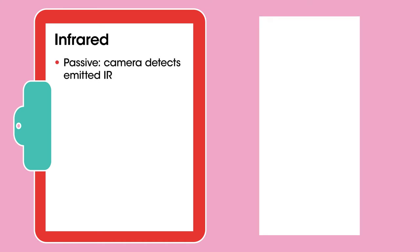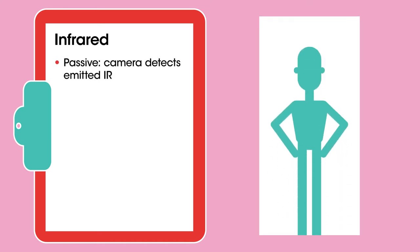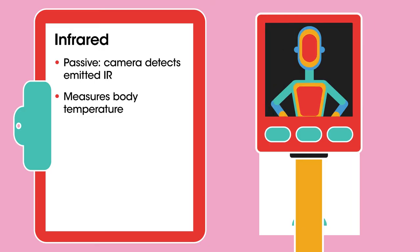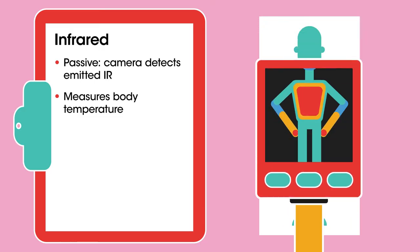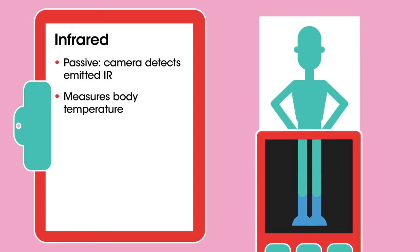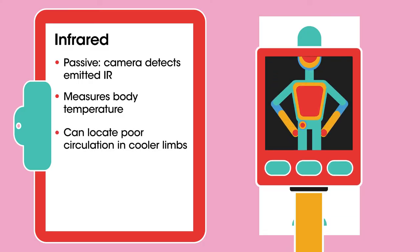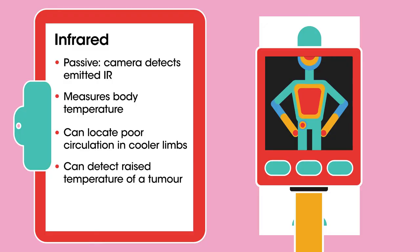Infrared — this is a passive imaging technique. The infrared camera merely detects heat given off by the patient. Detecting local variations in skin temperature may show regions with poor circulation or the presence of tumors. A slightly raised temperature can be a quick check for illness before symptoms have appeared, and is useful for scanning crowds in an airport, for example.